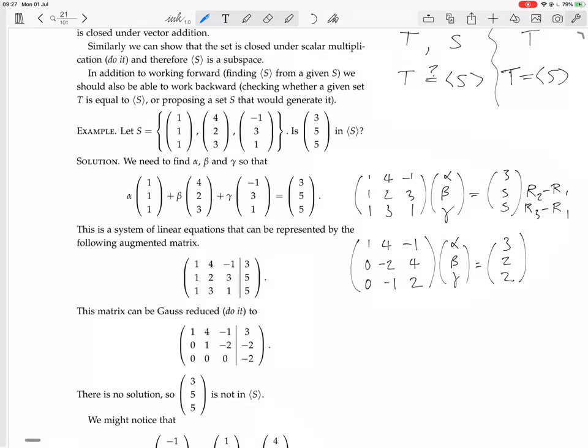Now, we could do row 2 minus 2 times row 3. Then we could times row 3 by negative 1 to make a negative. Oh, let's just do this. Row 2 minus 2 times row 3.